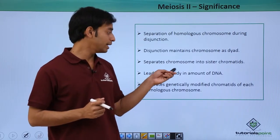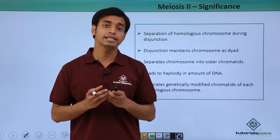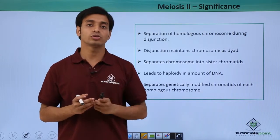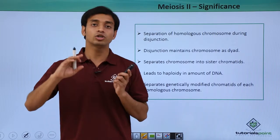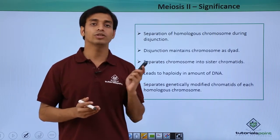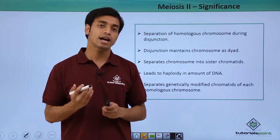This leads to haploidy in the amount of DNA. Initially, the parental cell was diploid. Due to these processes, haploid gametes are formed. Initially, there were 2N chromosomes. Now there are N chromosomes. That is, the number of chromosomes gets halved.